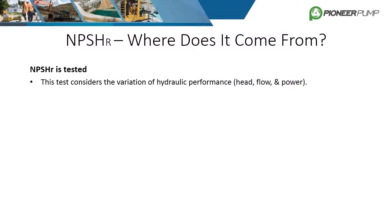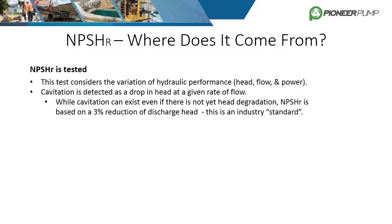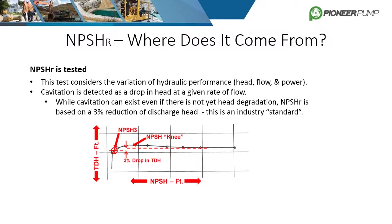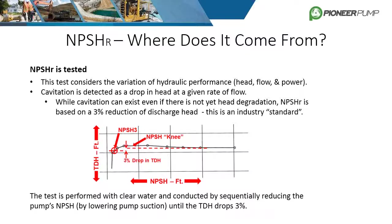When testing a pump, all variations of hydraulic performance are considered including head, flow, and power. Cavitation is detected on paper as a drop in head at a given flow rate. While cavitation can't exist without head degradation, NPSHR is defined as a 3% reduction in discharge head — a hydraulic institute standard. The pump is initially run at a given head and flow, and the discharge head is recorded. The pump is then subject to an increase in suction lift, reducing NPSHA by a specified amount, then the discharge pressure is measured again. These points are plotted on a graph, and this process continues until a 3% reduction in discharge pressure is observed.